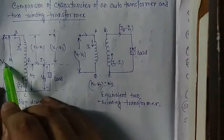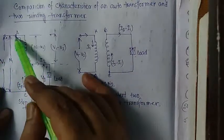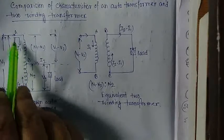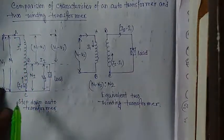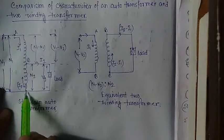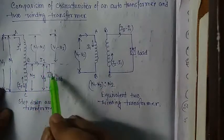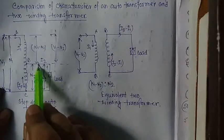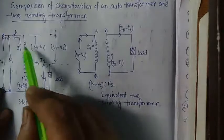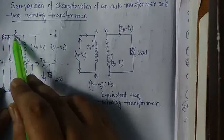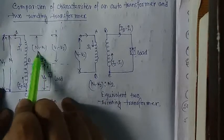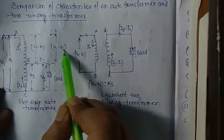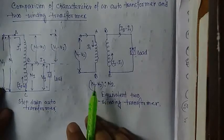Here V1 is the source voltage, N1 is the number of turns A to C, N2 is the number of turns B to C. Current I1 flows from A to B and current I2 minus I1 flows from C to B. Across the load the voltage is V2 and current I2 flows through the load. Across AB the number of turns is N1 minus N2 and the voltage is V1 minus V2, as it is a step down transformer.